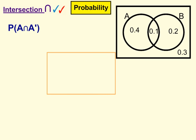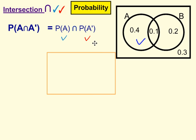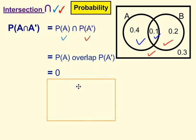Fifth example: the probability of A intersection probability of not A. Break it apart. Tick first where A is, and then secondly where not A is. So A is in this region here and this region here. And not A is shown in the red tick, this region here and this region here. Now we're looking for the two ticks — is there any region that contains two ticks? No, there isn't. So therefore, where they overlap is 0.